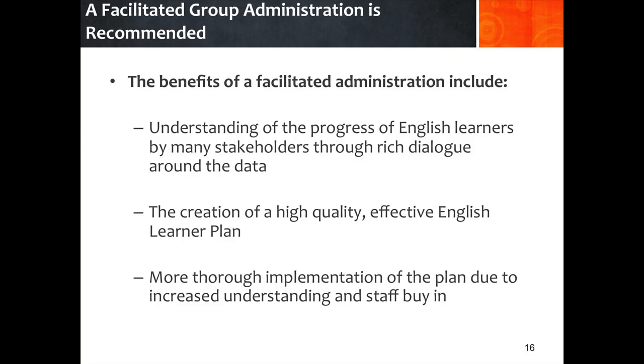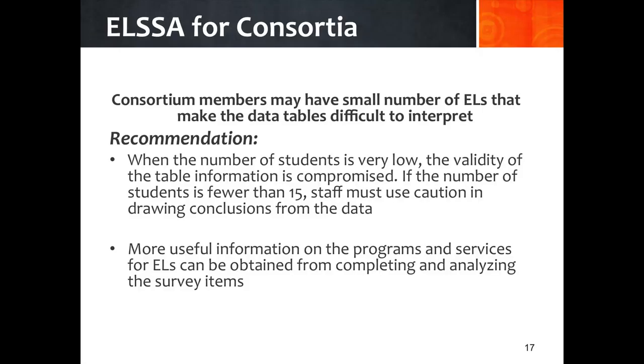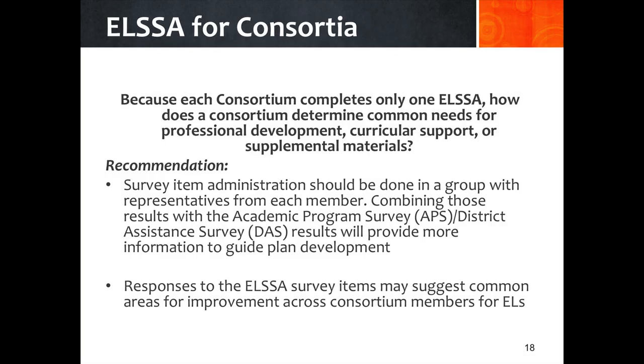So how can you gain a better spectrum of the survey's responses? Involvement of stakeholders is essential to gain a deeper understanding of the services provided to English learners. Local education agencies or districts eligible to receive a subgrant of less than $10,000 must form a consortium, where the subgrant generated by the participating LEAs collectively equals or surpasses $10,000. Here are a few tips on how to make use of the ELSA tool for districts that must form a consortium: if the consortium members have small numbers of English learners, it is recommended to focus on the survey questions, so consortium members can use the survey responses to devise a common plan for improvement.